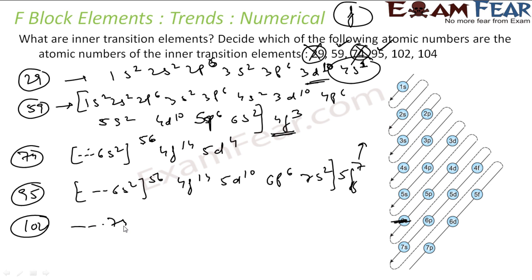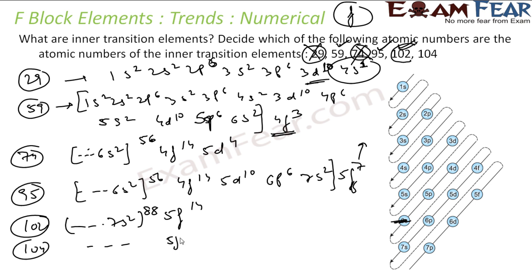Similarly for element 102: up to 88 we write 7s2, then 5f14 gives 88 + 14 = 102 — the last electron enters the f block, so it is an f-block element. For element 104: after 5f14 we move to 6d2, so the last electron goes into the d block — element 104 is a d-block element, not an inner transition metal. Just write the electronic configuration and it will tell you whether it is s, p, d, or f block.